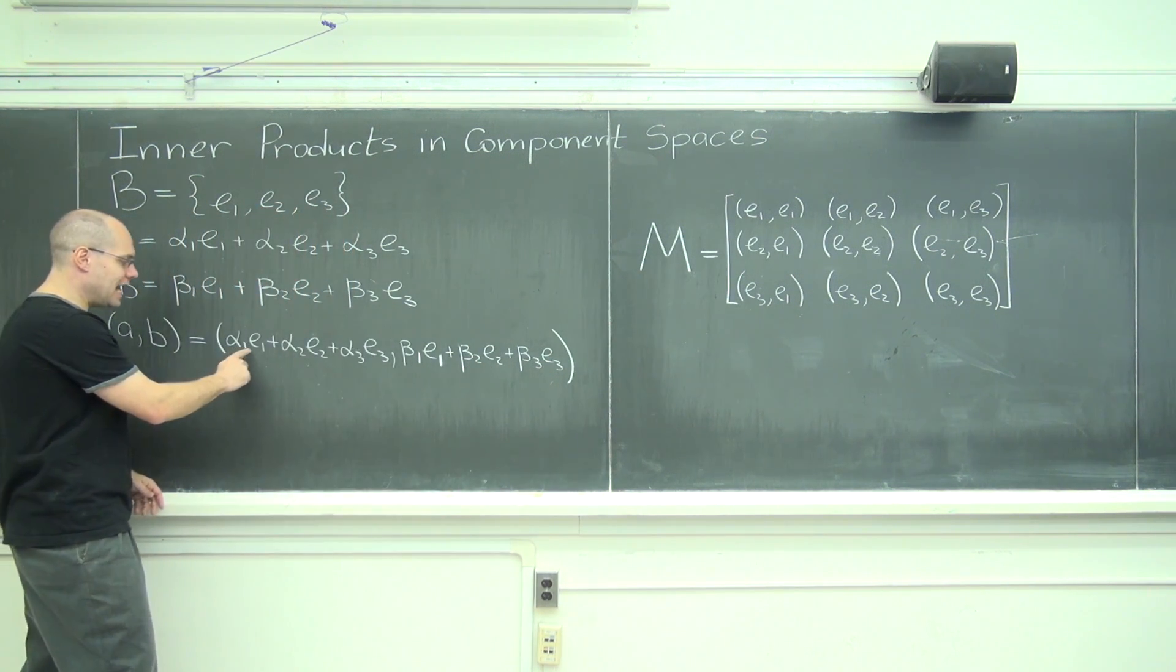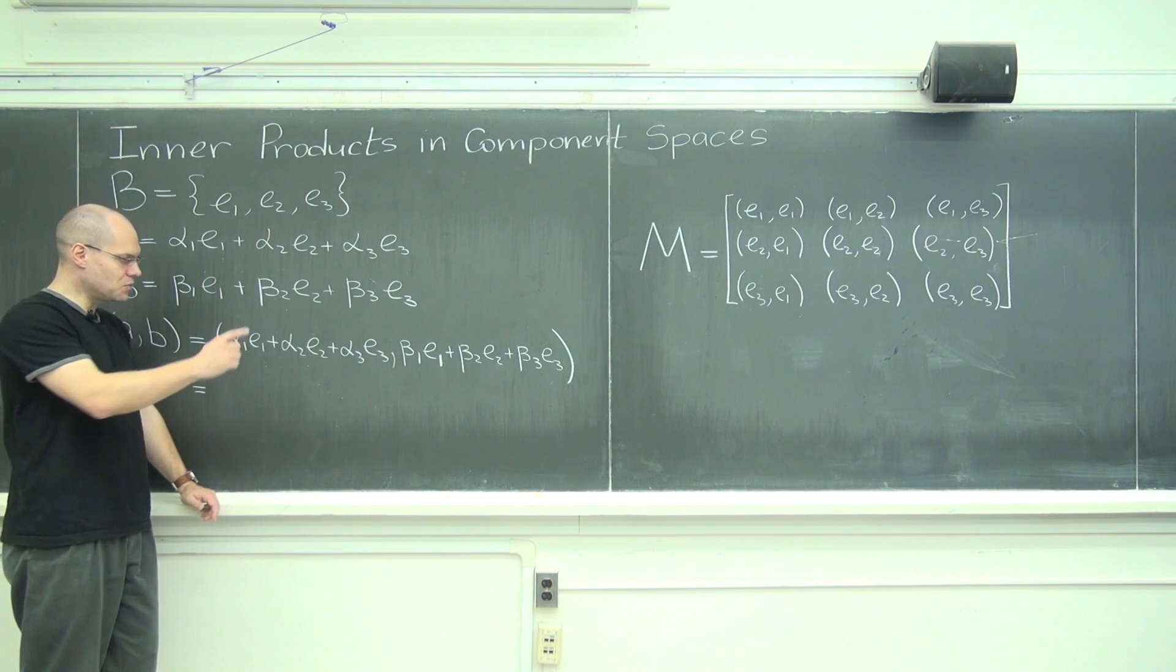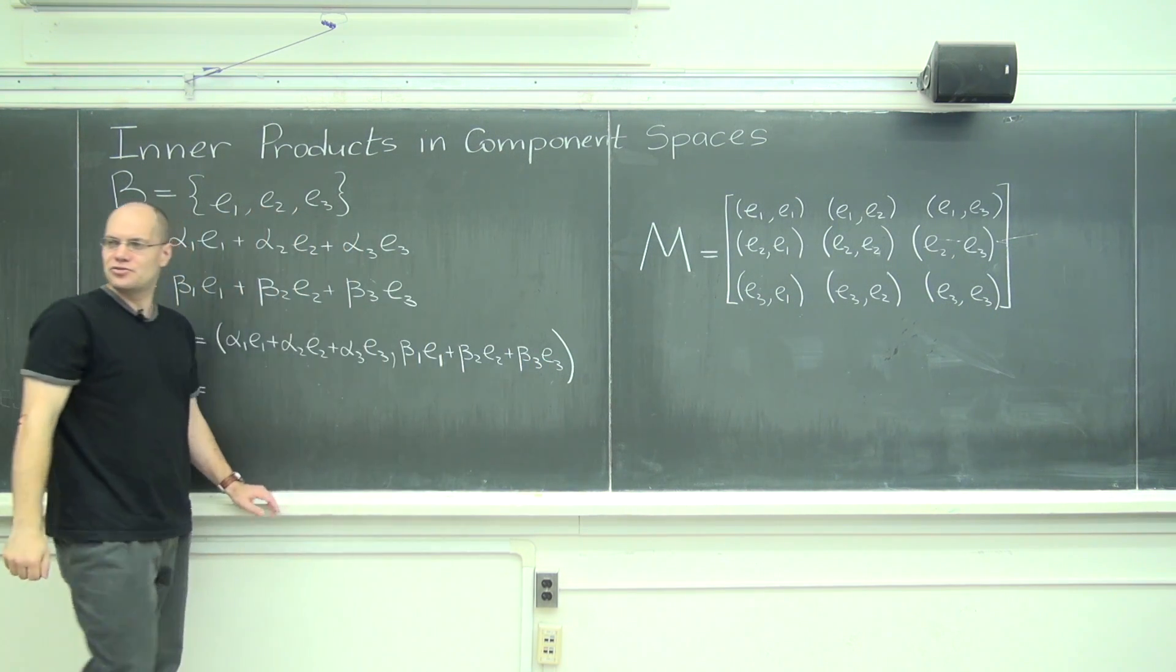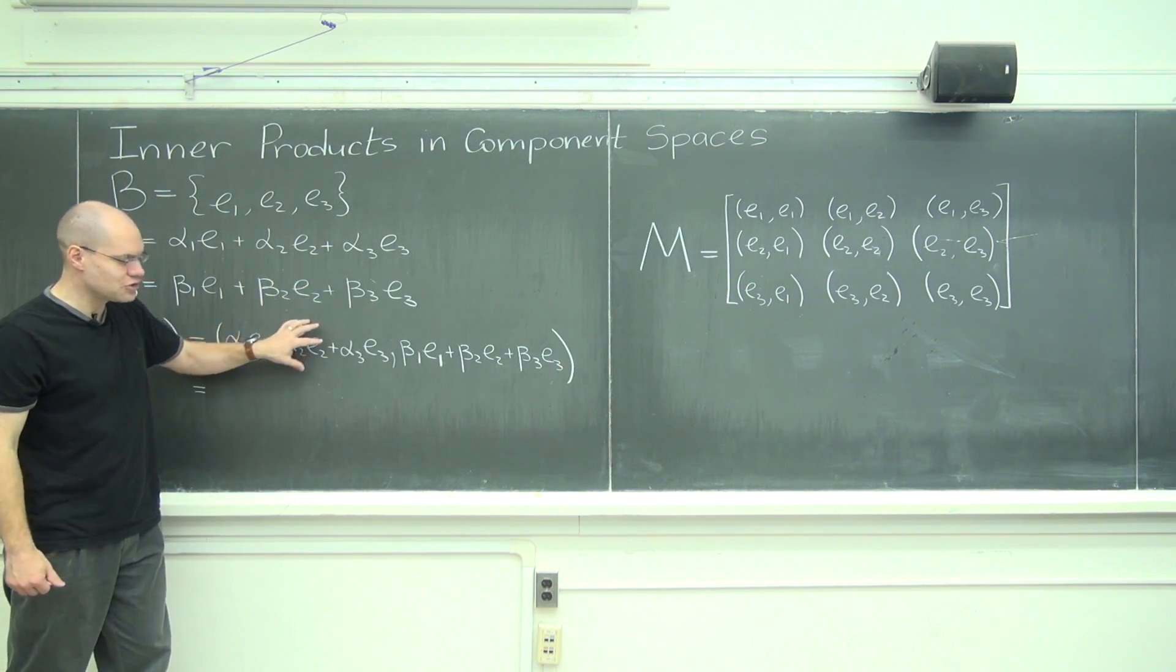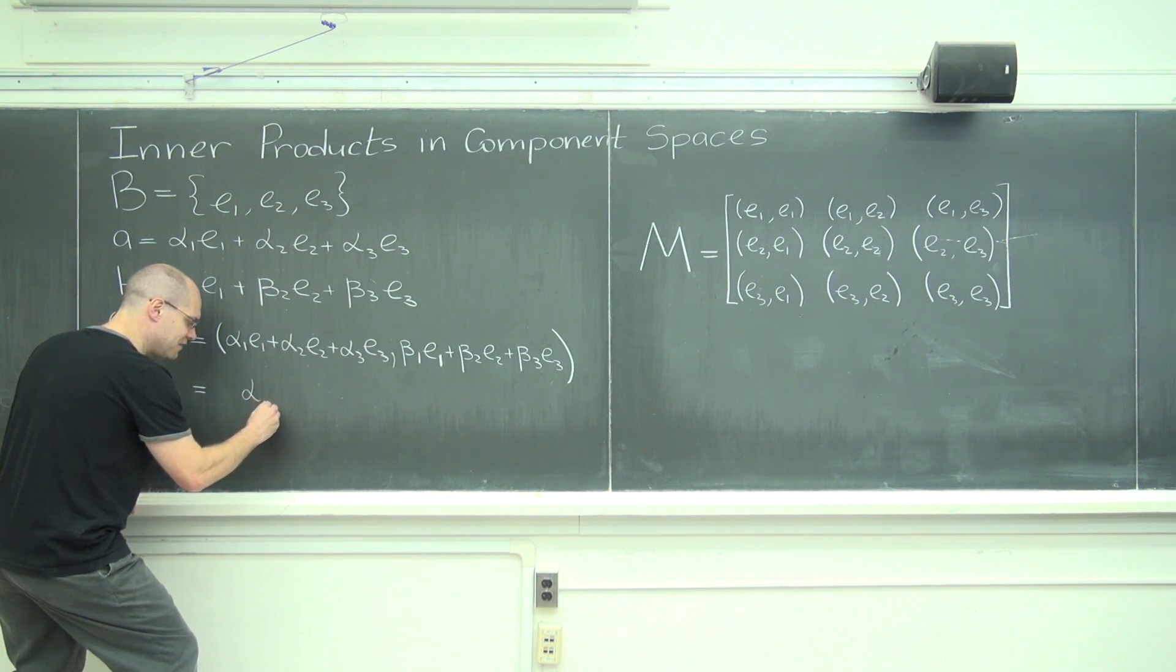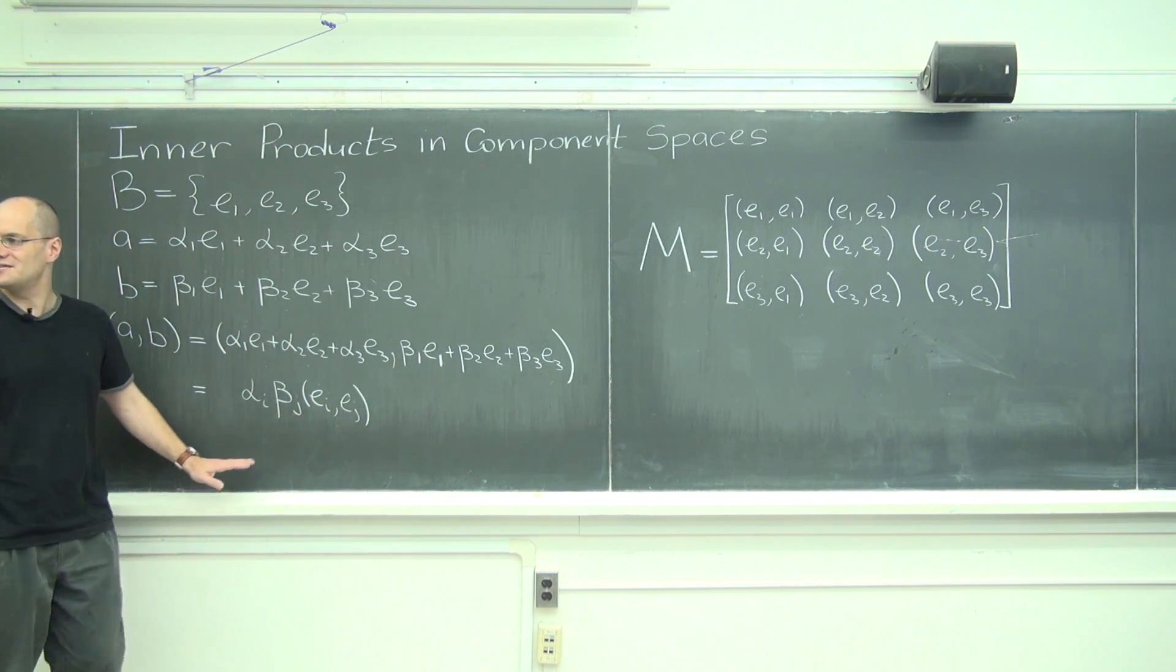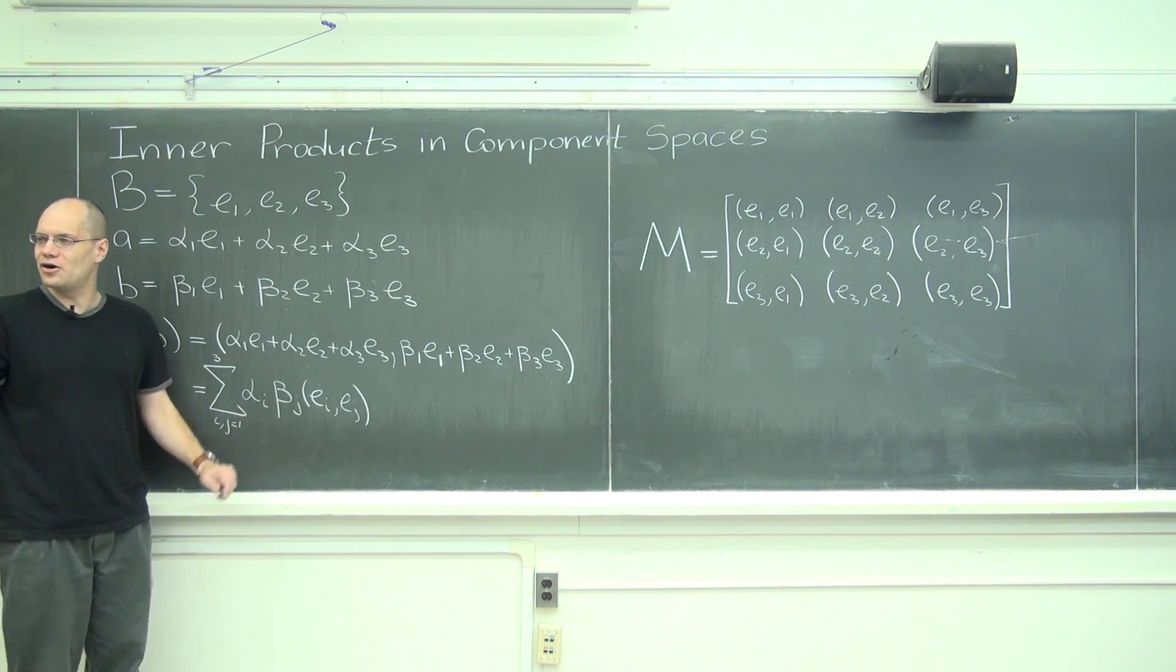One of them will be alpha 1 beta 1 times e1 dotted with e1. And another one will be alpha 1 beta 2 times e1 dotted with e2. Just using distributivity. And alpha 1 beta 3 times e1 dotted with e3. Do you see it's those nine terms? So I just mentioned a third of them right there. There will be corresponding three terms for this and corresponding three terms for this. So you can almost write them down as a typical term would be alpha i beta j. And that would multiply ei dotted with ej. And so I'll put a summation sign here. Over all i and j, they go from one to three each. Is it okay to combine all nine terms this way?